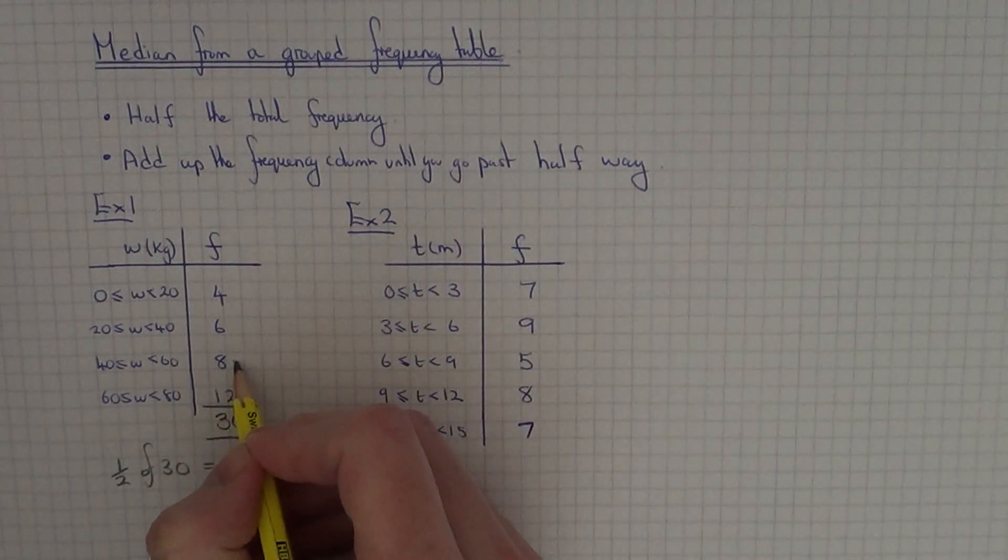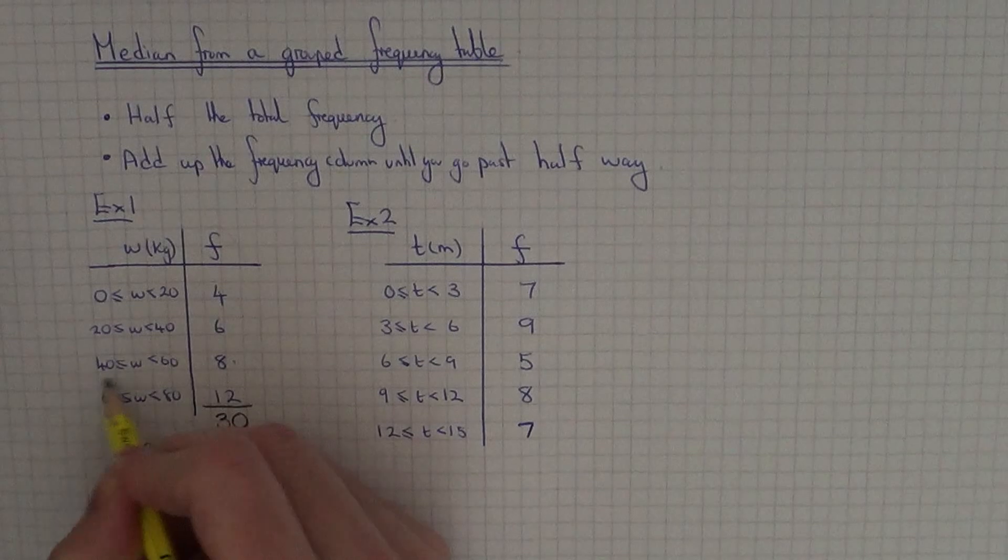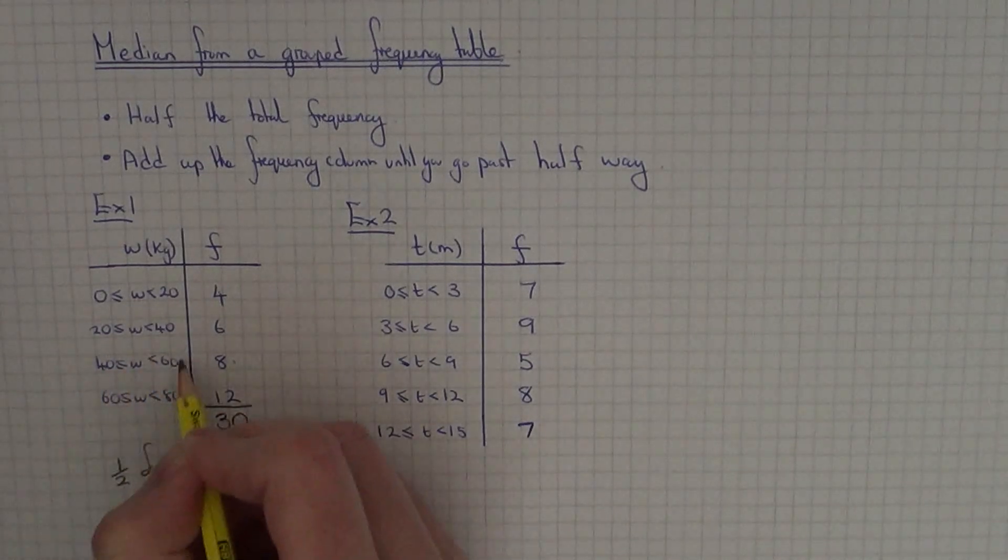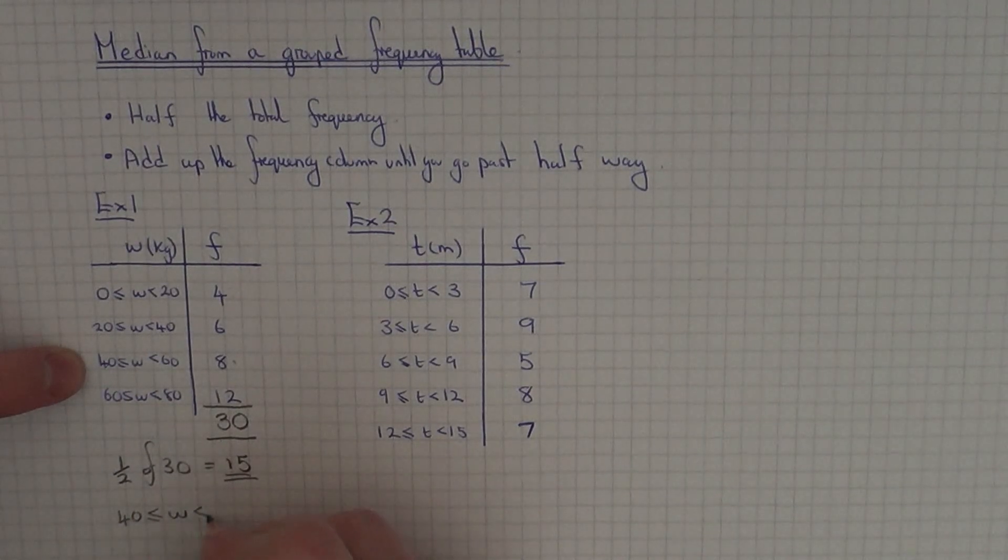That tells us that the 15th person has a weight between 40 and 60 kilograms. So our median class interval will be 40 up to 60 kilograms.